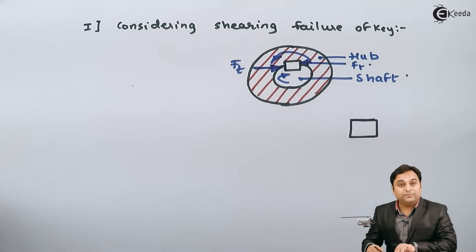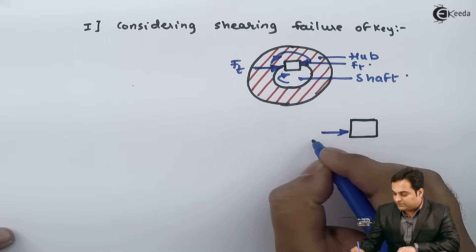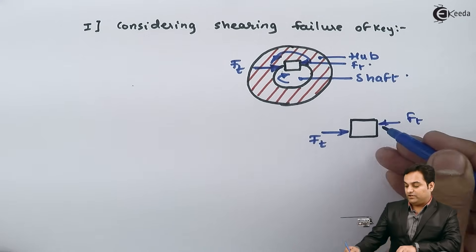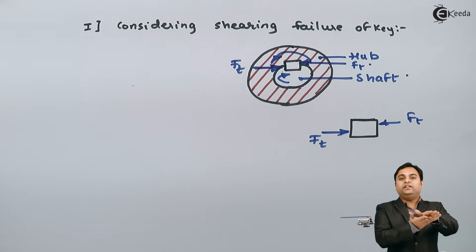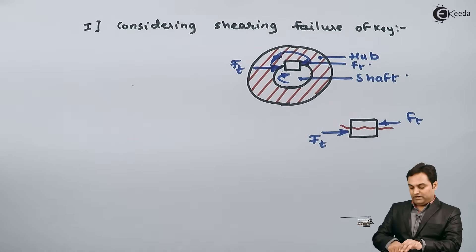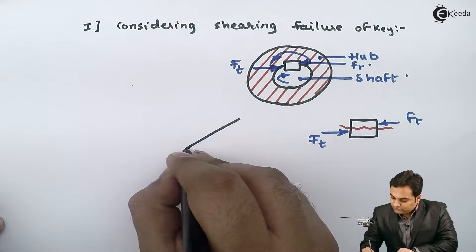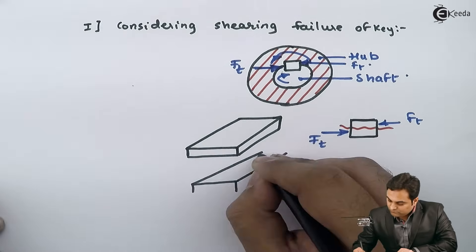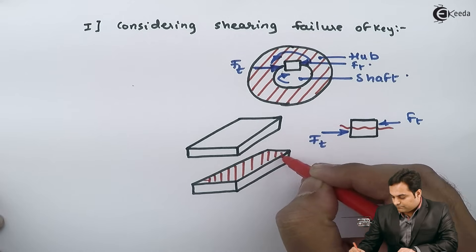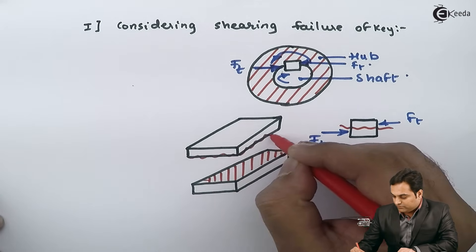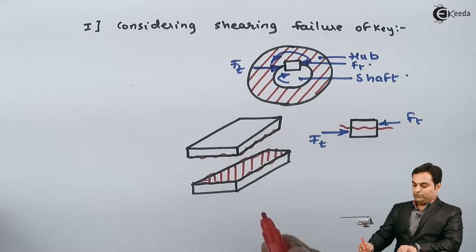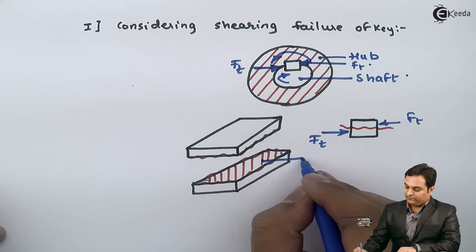Taking the key separately: one tangential force acts towards the right (from the shaft) and another acts towards the left (from the hub). Because of these two opposing sliding forces, the key undergoes shearing — breaking into two halves. This shearing area is the cross-section where the key fails in shear.